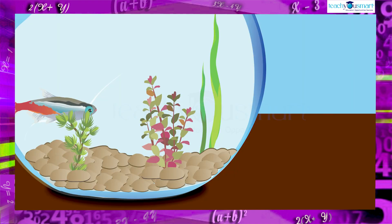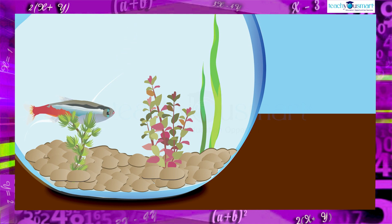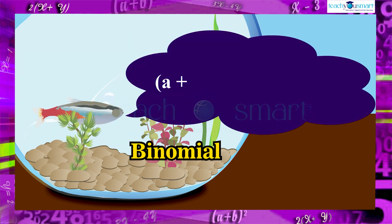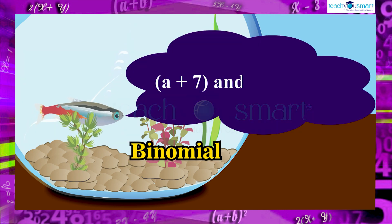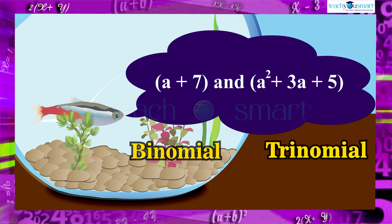We know the multiplication of a binomial by another binomial. How can we multiply a binomial by a trinomial? Let's take a binomial (a + 7) and a trinomial (a² + 3a + 5) and multiply it.